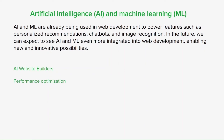AI-powered performance tools can also help developers improve the performance of web applications by analyzing an application and suggesting ways to improve it. For example, Google Lighthouse is a free tool that uses AI to analyze web pages and provide recommendations on how to improve performance and accessibility, identifying bottlenecks like unused CSS and JavaScript and suggesting fixes.